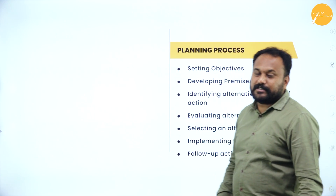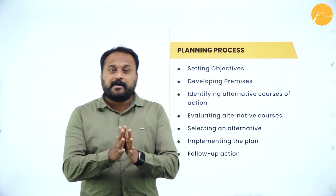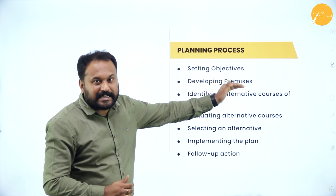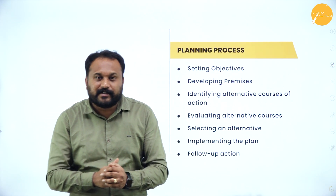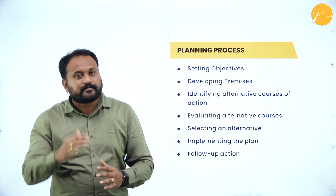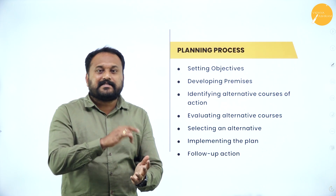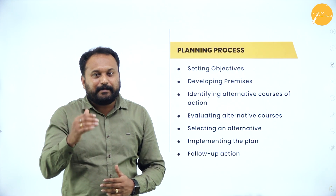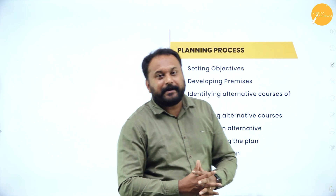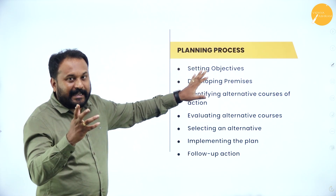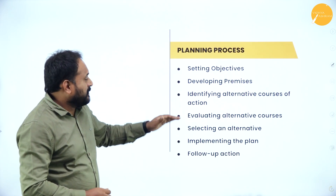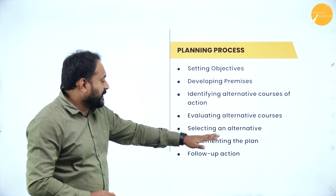Next we go with the planning process. Whenever I say process, it is always step by step. The first step is setting objectives — the setting of objectives itself becomes your standard. The second is developing premises. Third is identification of alternate courses of action. Next is evaluating alternate courses of action. Then selecting the best course of action. After that you implement the plan. After implementation, you need to follow up whether you are doing it right or wrong. These are called the steps in the planning process.